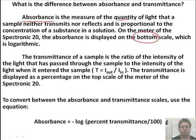The transmittance of a sample is the ratio of the intensity of the light that is passed through the sample to the intensity of the light when it entered the sample. So light out to light in, the intensity of the light. The transmittance is displayed as a percentage on the top scale of the meter. To convert between the absorbance and the transmittance scales, we use these equations. Absorbance equals the negative log of the percent transmittance over 100.